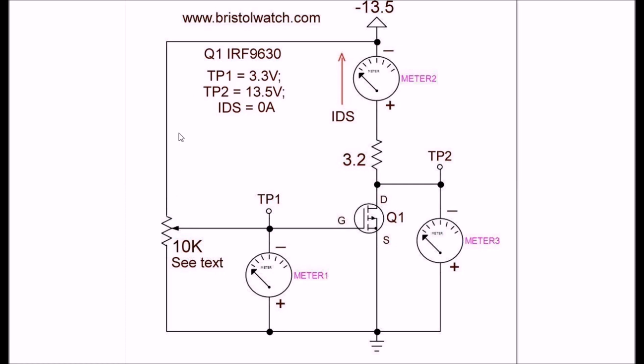At test point one when I set it to 3.3 volts the transistor Q1 does not turn on. Test point two is going to read the full voltage back from the power supply and there's going to be no current draw at all.